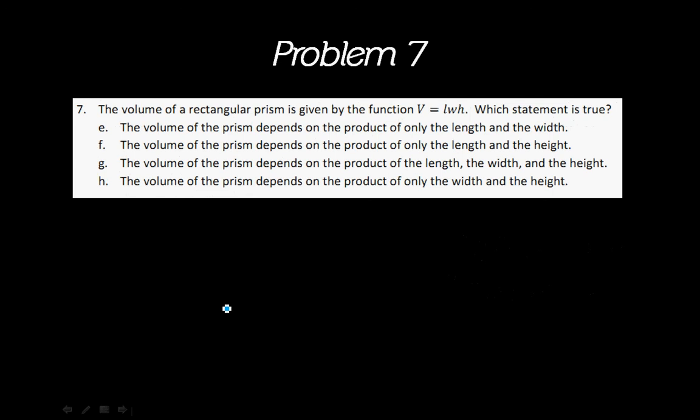In number 7, it says the volume of a rectangular prism is given by the function V equals l times w times h, or length times width times height. Which statement is true? So once again, you need to fixate yourself on which is in the equation and which is at the end of the equation. These three letters are all in the equation. And this one is at the end of the equation.